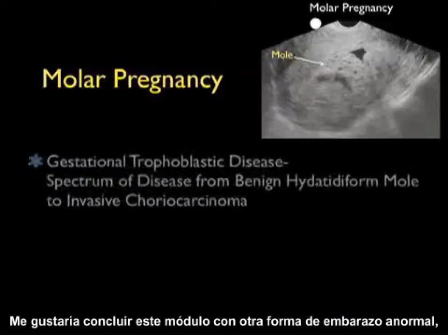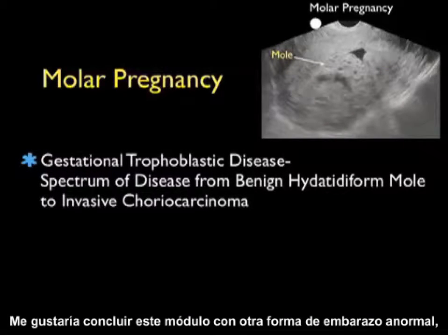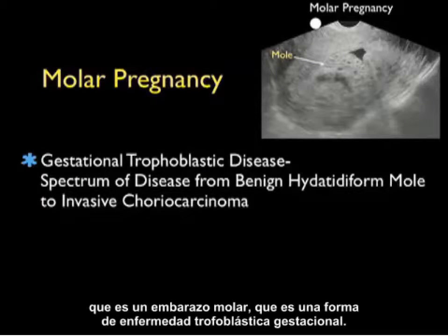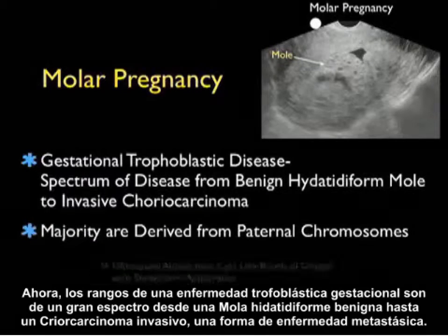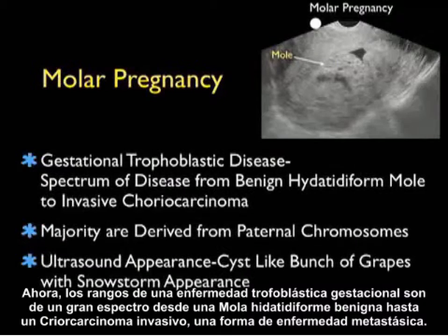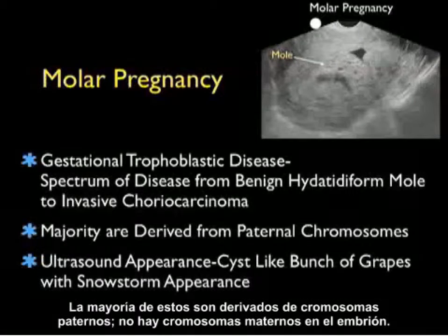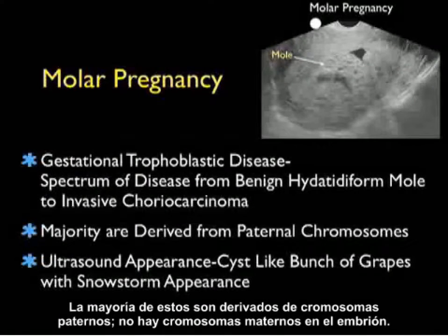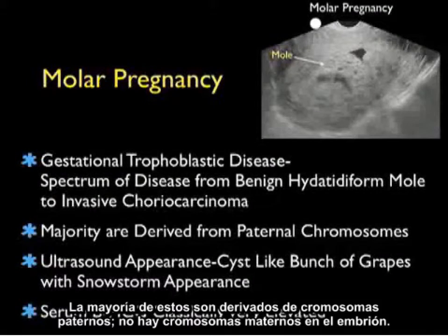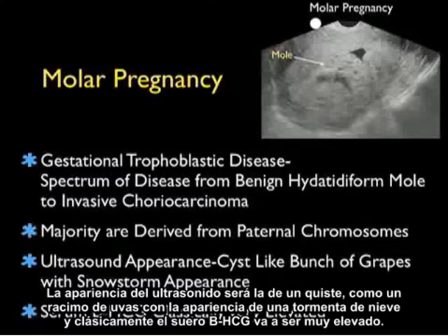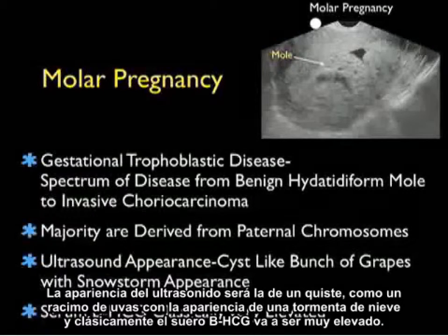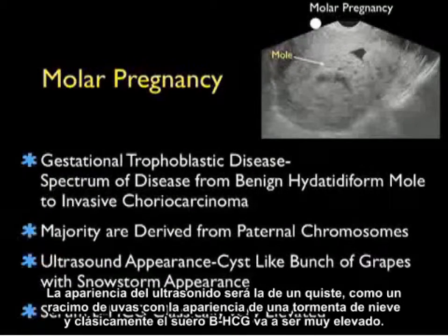I'd like to conclude this module with another form of abnormal pregnancy: a molar pregnancy, which is a form of gestational trophoblastic disease. Gestational trophoblastic disease ranges from a benign hydatidiform mole to invasive choriocarcinoma, a form of metastatic disease. The majority are derived from paternal chromosomes with no maternal chromosomes in the embryo. The ultrasound appearance will be a cyst-like bunch of grapes with a snowstorm-type appearance, and classically the serum beta-HCG will be very elevated.